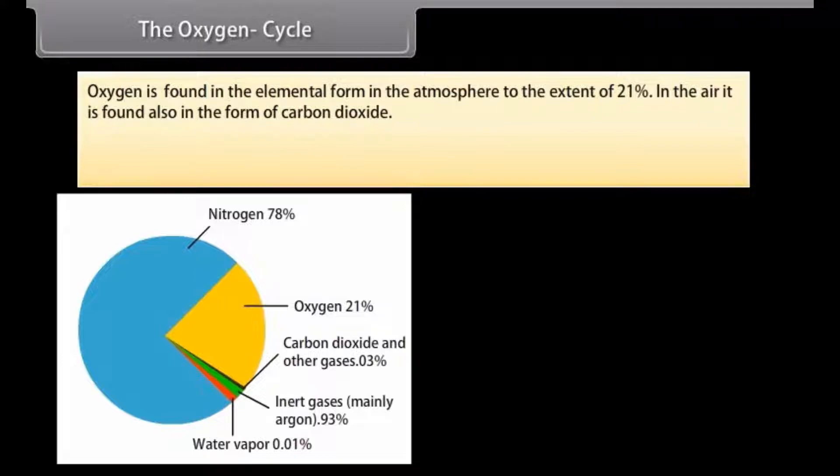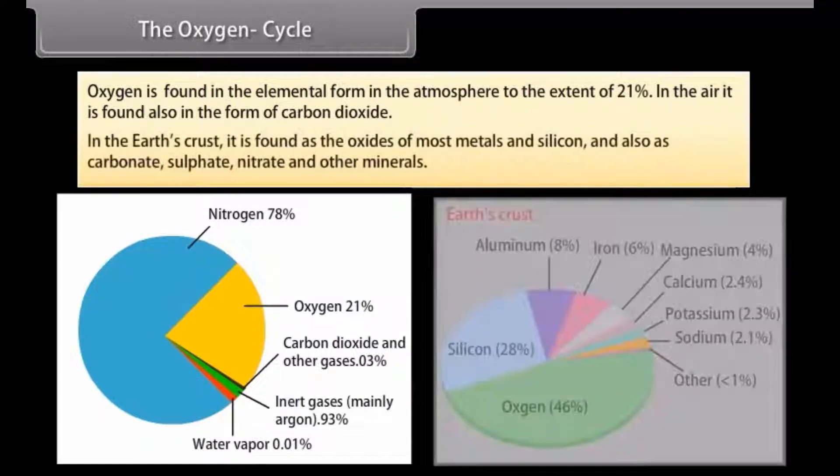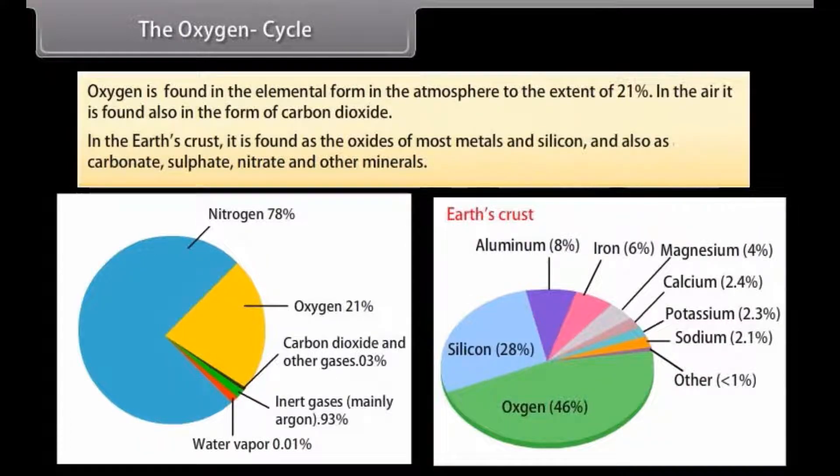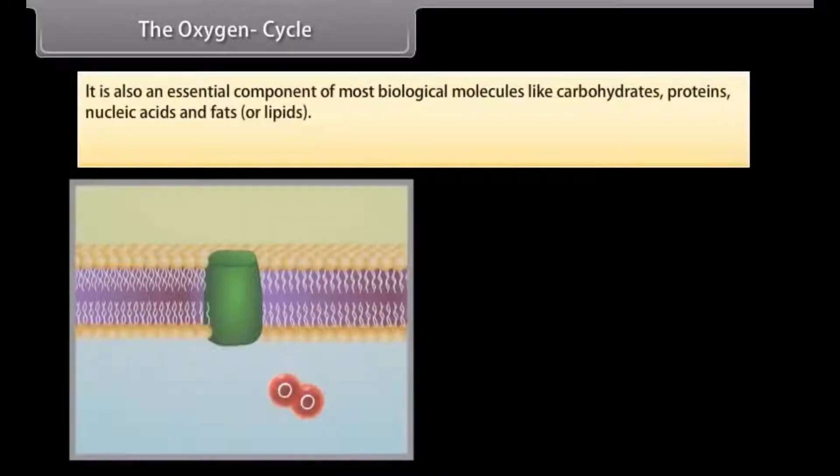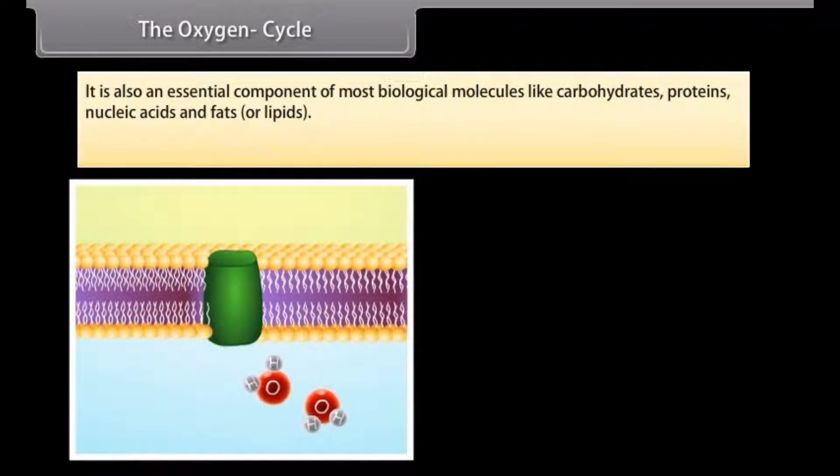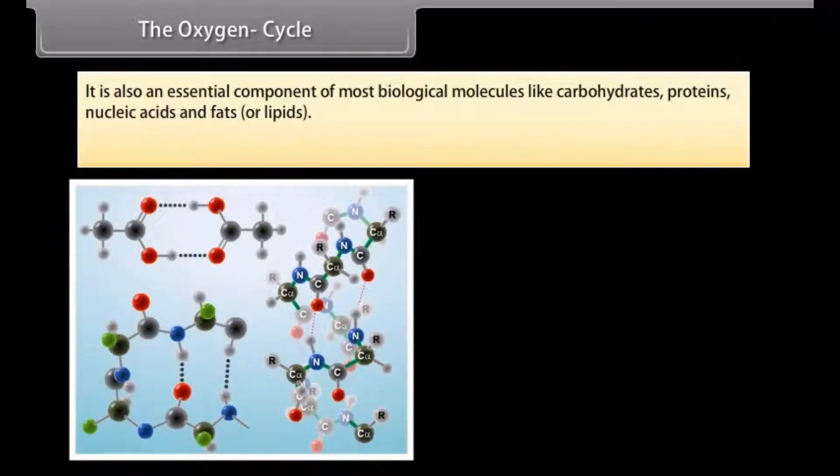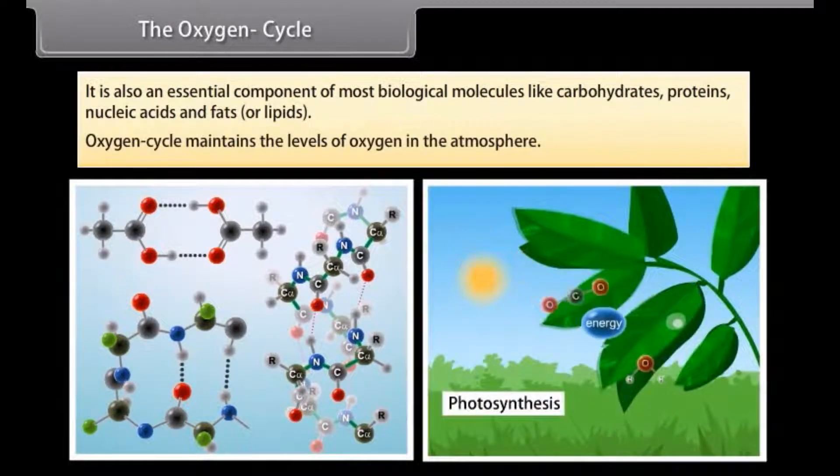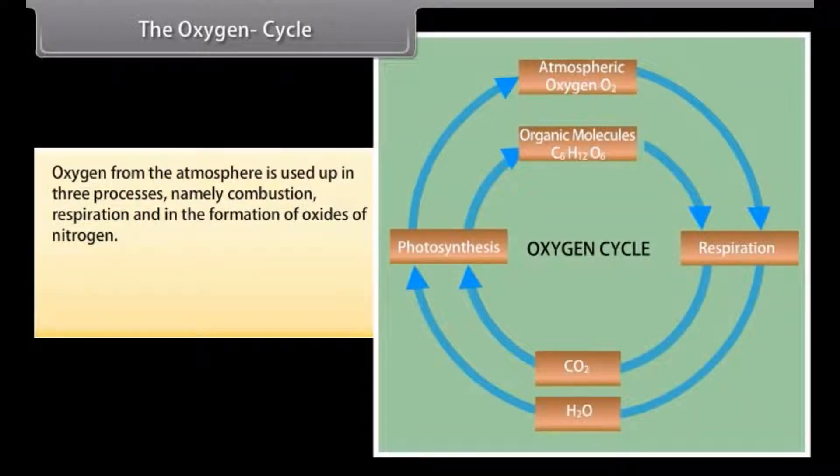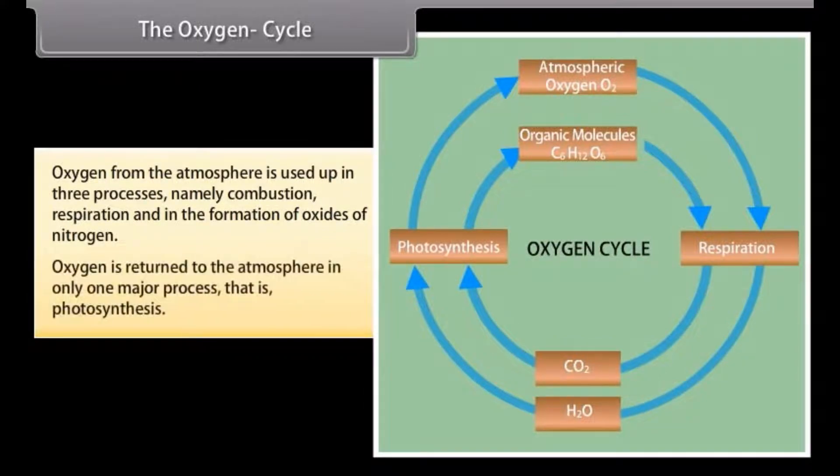The oxygen cycle: Oxygen is found in the elemental form in the atmosphere to the extent of 21%. In the air it is found also in the form of carbon dioxide. In the earth's crust it is found as oxides of most metals and silicon and also as carbonate, sulfate, nitrate, and other minerals. It is also an essential component of most biological molecules like carbohydrates, proteins, nucleic acids, and fats or lipids. Oxygen cycle maintains the levels of oxygen in the atmosphere. Oxygen from the atmosphere is used up in three processes namely combustion, respiration, and in the formation of oxides of nitrogen. Oxygen is returned to the atmosphere in only one major process, that is photosynthesis.